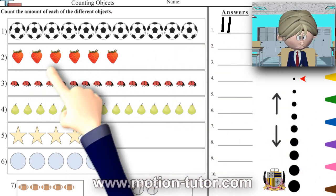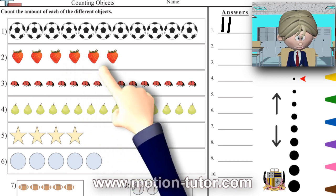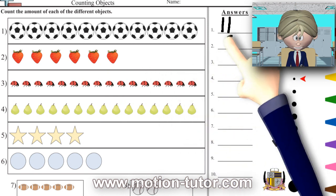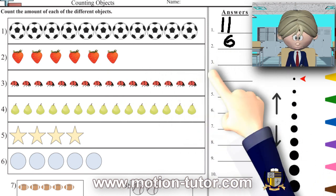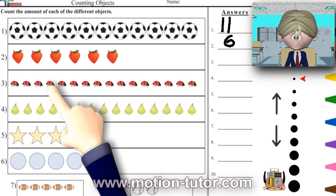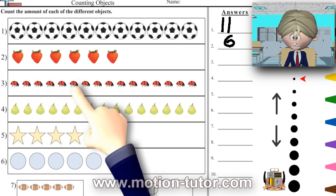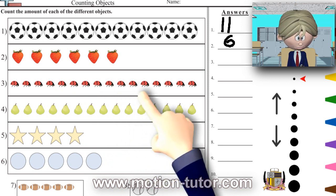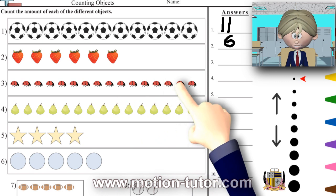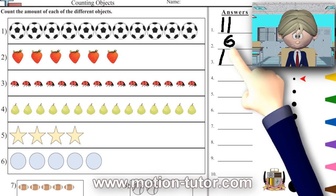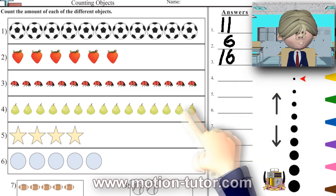Two, three, four, five, six. Six strawberries. We'll write the number six over here. Now we'll count the ladybugs. One, two, three, four, five, six, seven, eight, nine, ten, eleven, twelve, thirteen, fourteen, fifteen, sixteen. So sixteen ladybugs.